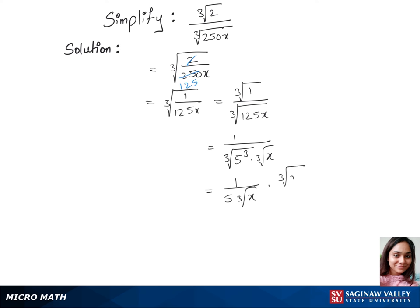We multiply by cubic root of x squared over cubic root of x squared. Multiplying gives us cubic root of x squared over 5 times cubic root of x times cubic root of x squared, which equals x. That's our final answer.